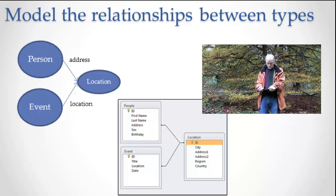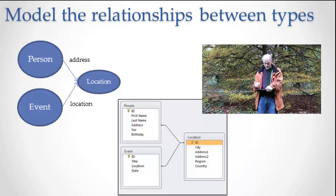In people, we have something called an address, and that line is going from address to the ID of a location. In event, we have location, and that location is going to the ID of a location.